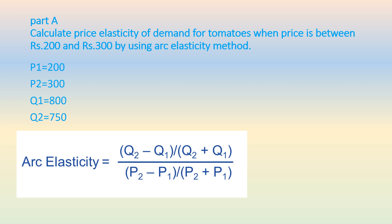The formula is: arc elasticity equals q2 minus q1 (the changed quantity minus the original demand) divided by q2 plus q1, the whole divided by p2 minus p1 (the new price minus the original price) divided by p2 plus p1. Let's see the calculation in the next slide.